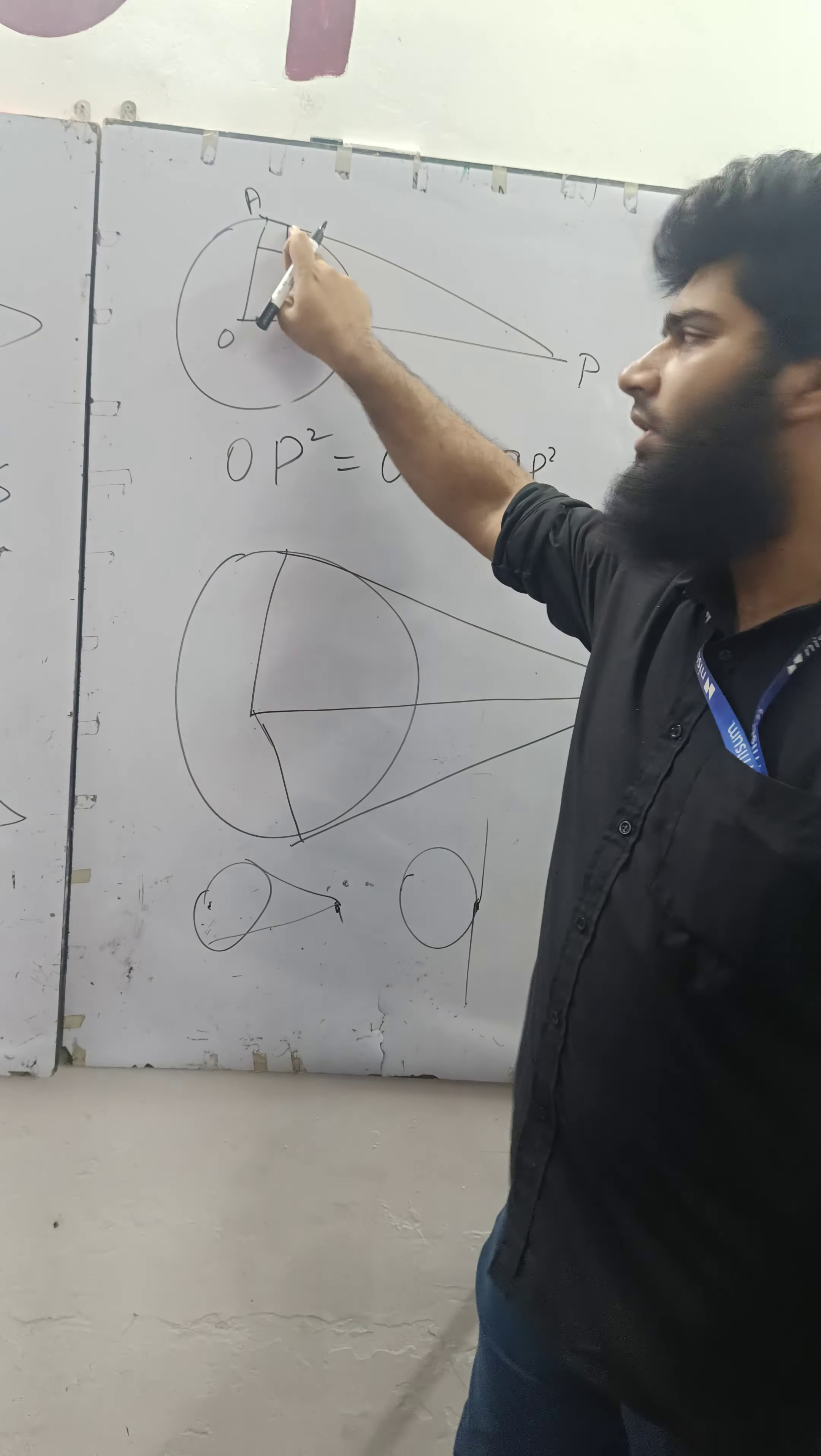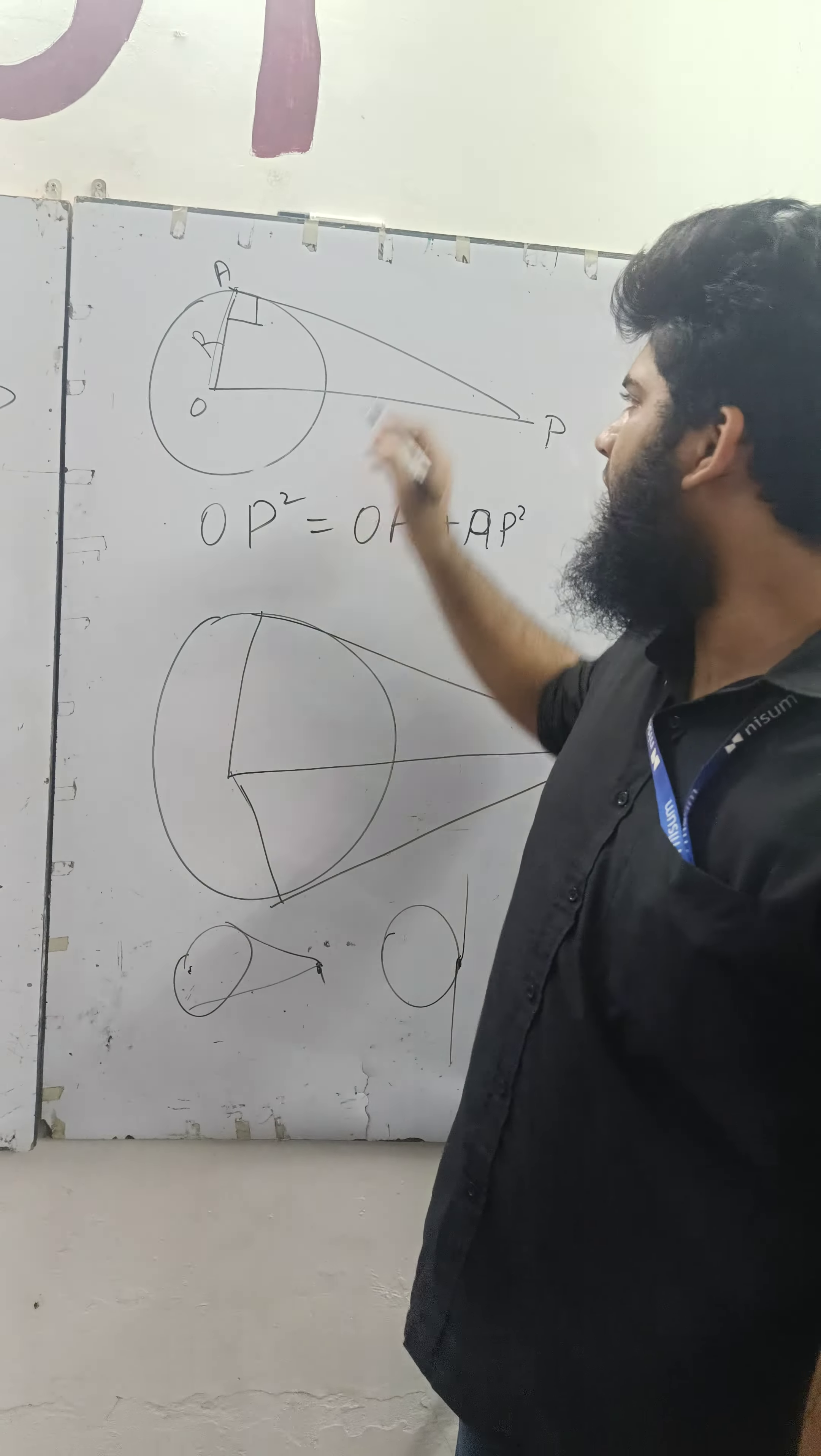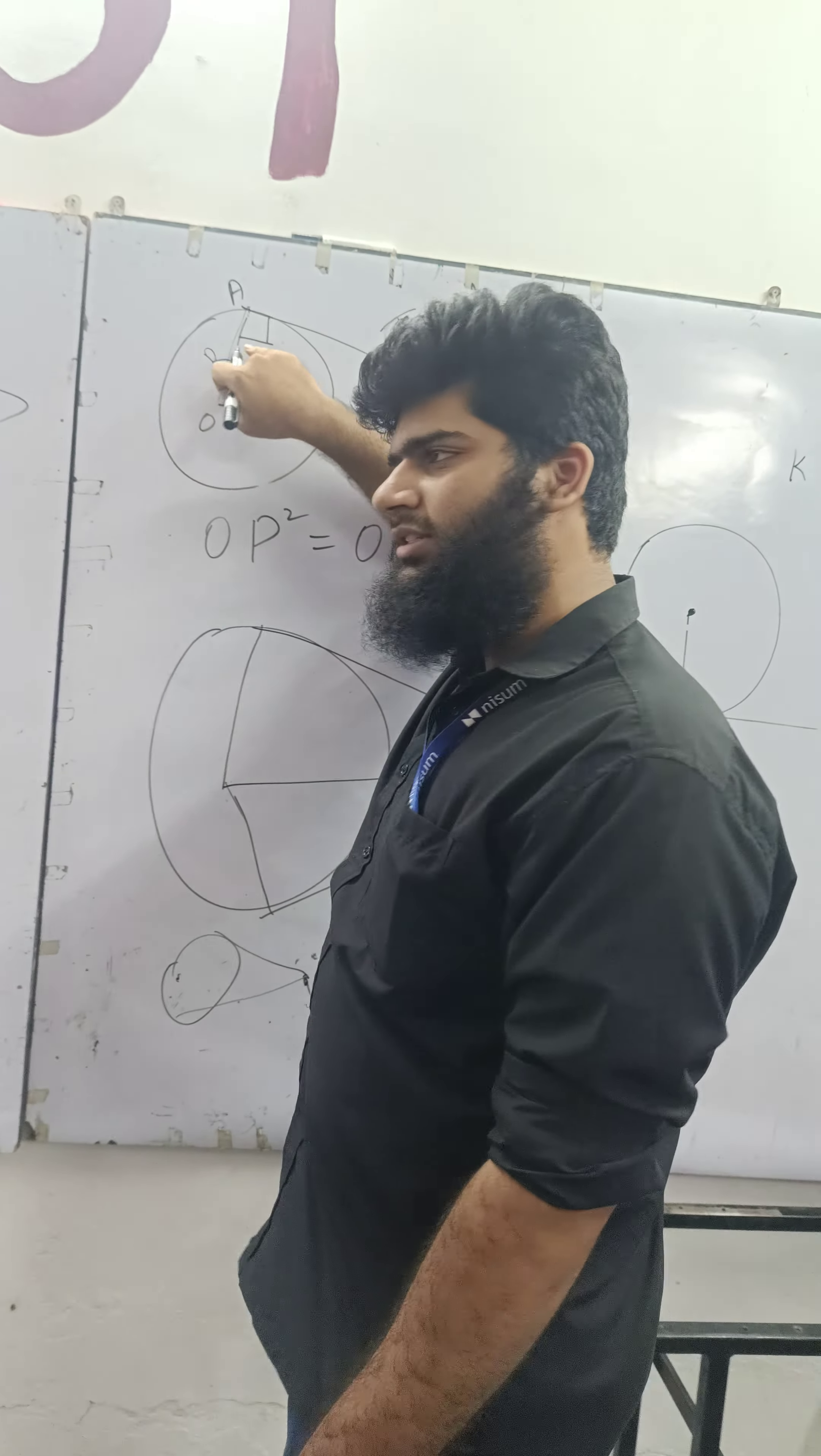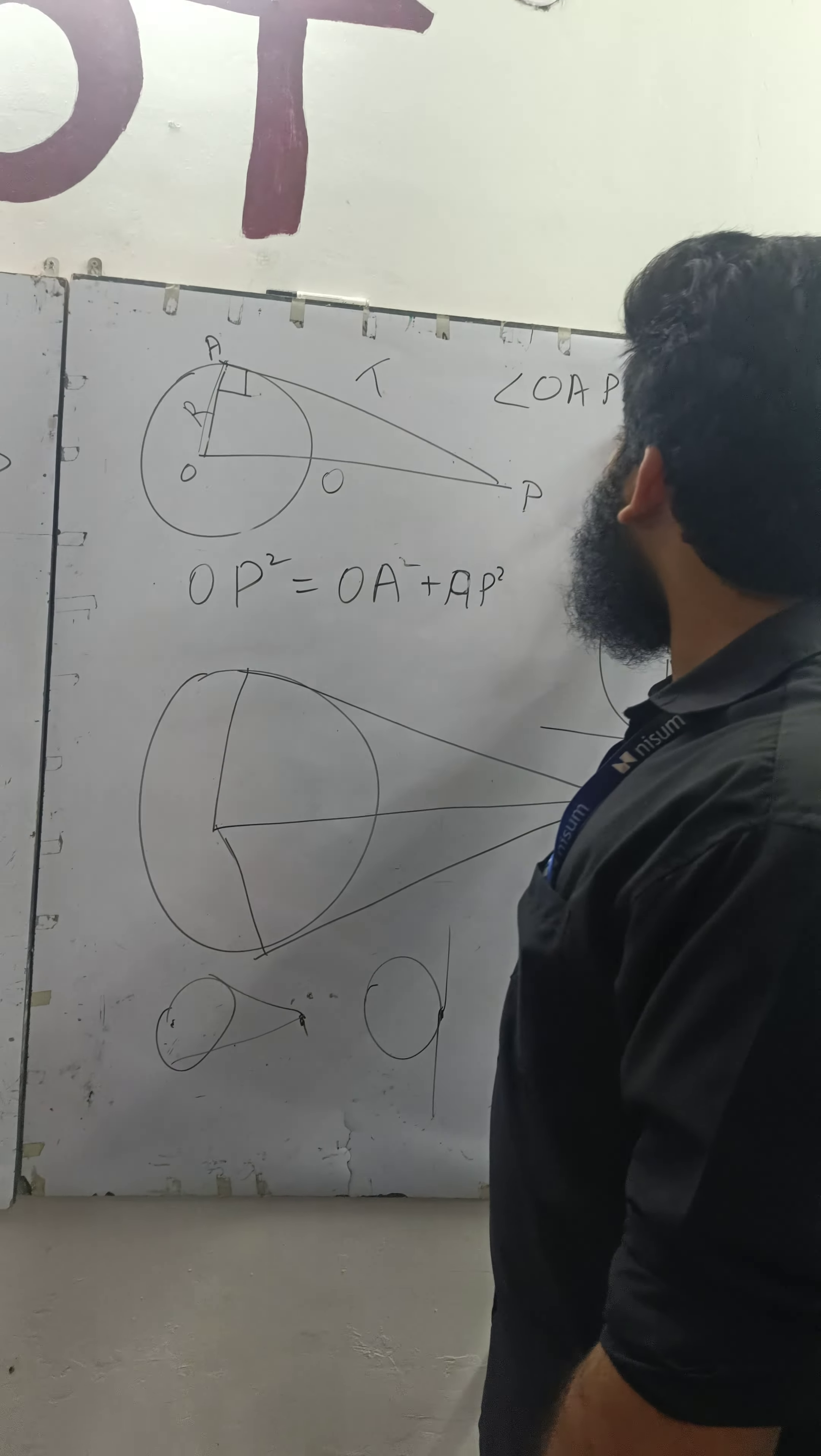Circle, this is tangent. Point P from A is tangent. This is radius. This is your tangent. This is your hypotenuse. Why? Because tangent is perpendicular to the radius. So, angle OAP is equal to 90 degrees.